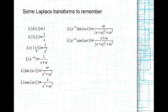The Laplace transform of sin(omega*t) is omega divided by s squared plus omega squared. The Laplace transform of cos(omega*t) is s divided by s squared plus omega squared. The Laplace transform of e^(-at) is 1/(s+a). The Laplace transform of e^(-at)*cos(omega*t) is (s+a) divided by (s+a) squared plus omega squared.